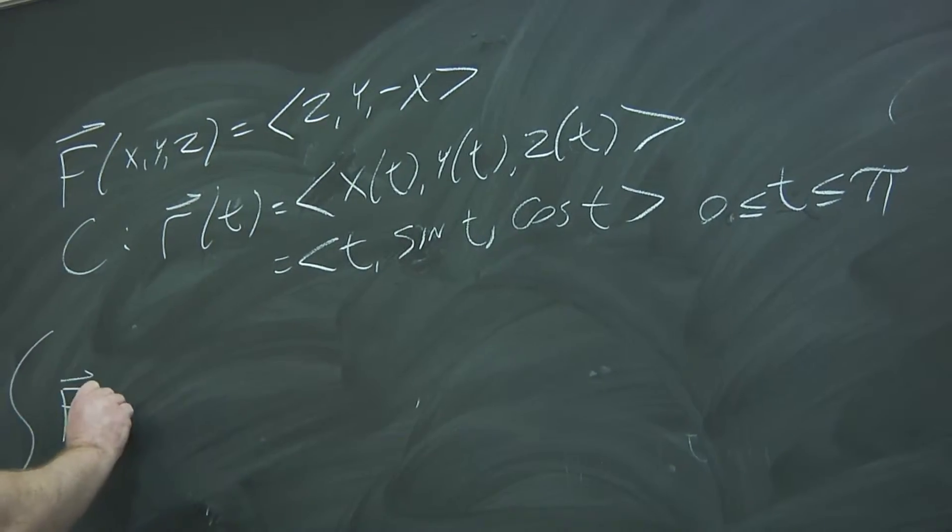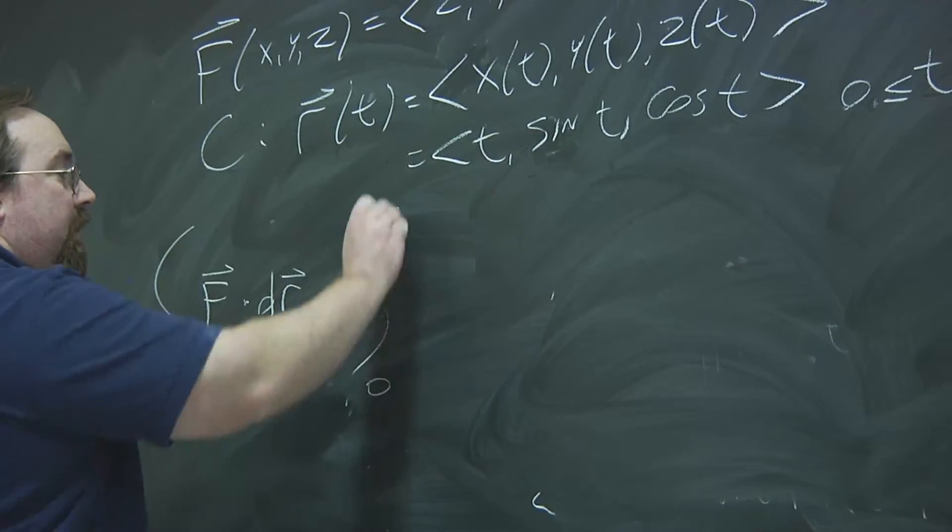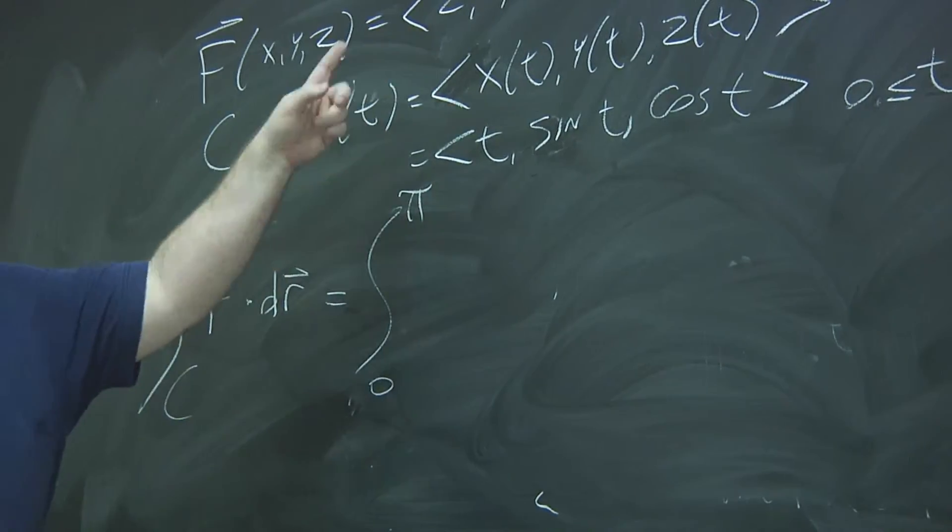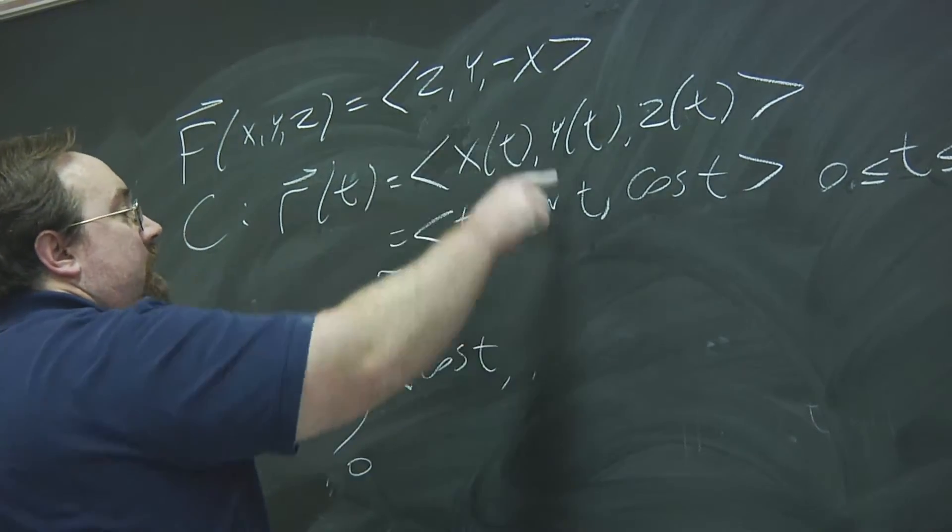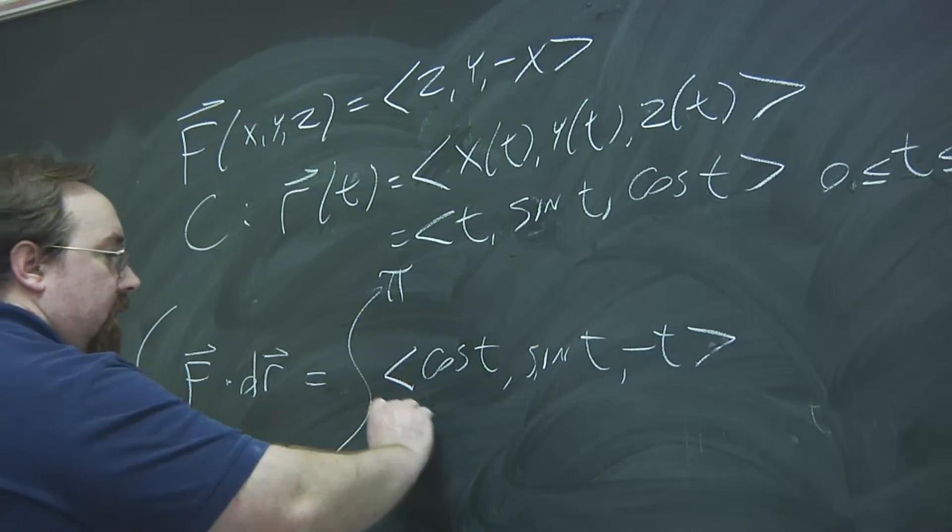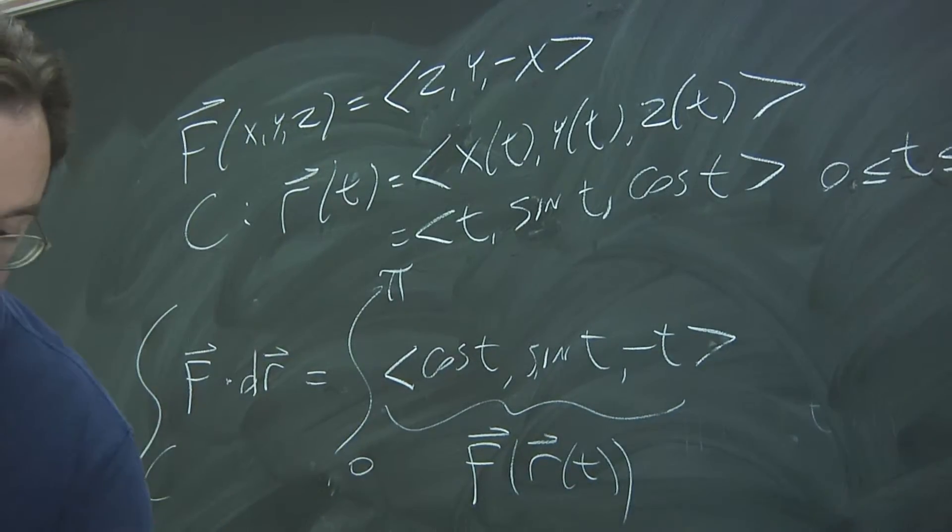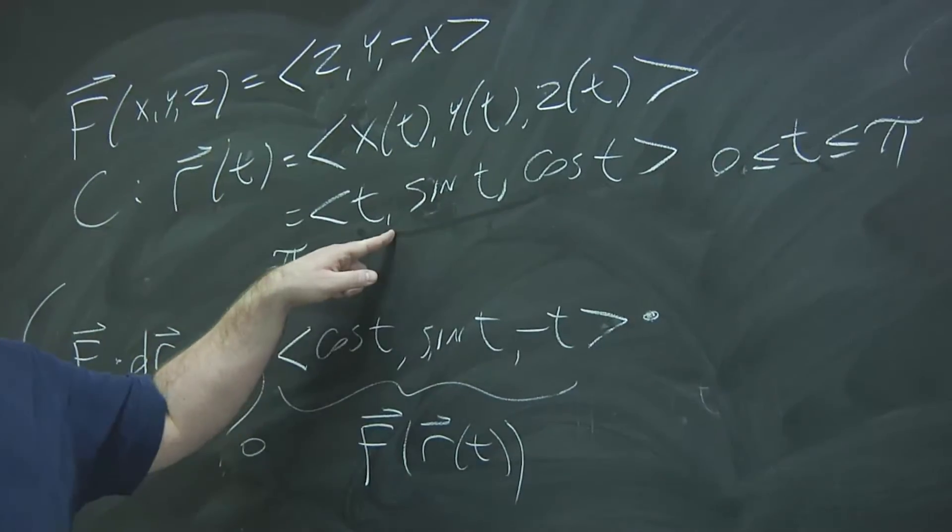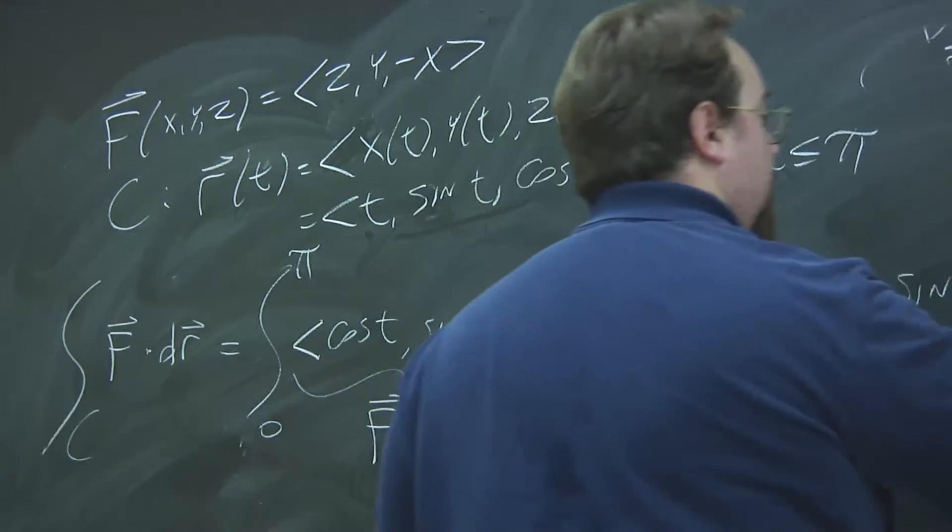So, the line integral of f over the curve is going to be the integral from 0 to pi. And what you'll do is you'll take in these x of t, y of t, z of t, and plug them in to your function f. So, we're going to have z, which is cosine t, y, which is sine t, and minus x, so minus t. So, this is your f of r of t, dot product with the vector of your derivatives. So, we have 1, cosine t, minus sine t, dt.